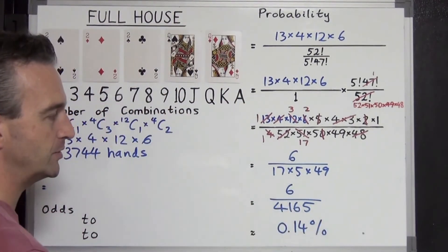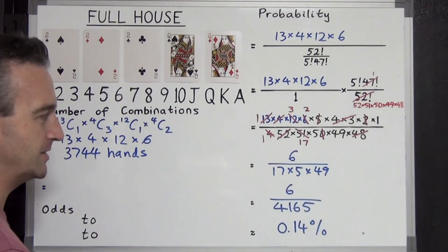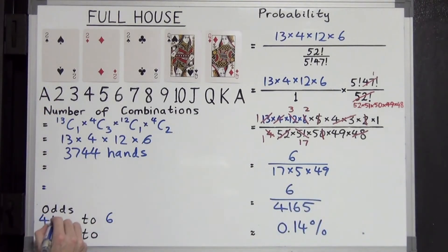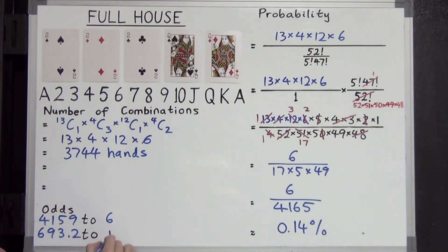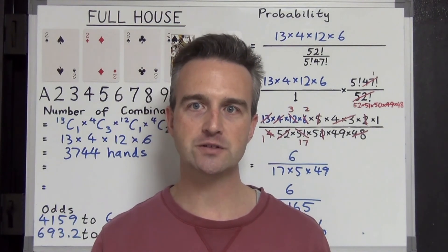Let's take a look at the odds of it happening now. So for every 4,165 hands in 5 card poker, you can expect to get 6 full houses on average. So looking at those odds, for every 6 full houses you get, and doing the subtraction here, you can expect to get 4,159 hands that will not be a full house. Dividing both of these by 6, you're going to end up with 693.2 to 1. Almost 700 to 1. So there you go. The number of full house hands that are possible in 5 card poker, and the probability and odds of them happening.